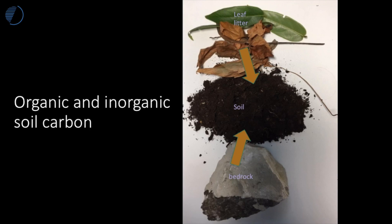Carbon in soil is actually coming from two different pathways. Firstly, it comes from below the soil. Below the soil we have bedrock. That bedrock, particularly if it's a carbonate rock which contains carbon, such as a limestone — this is a piece of limestone here — as that carbonate rock is weathered through the process of carbonation, it will release carbonate ions into the soil. This is called the inorganic pathway.